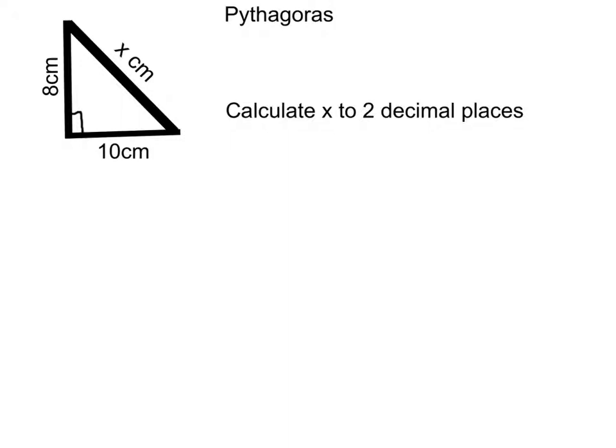So first we always label our diagram. The long side, which is always opposite the right angle, we call c, and then we label the other two a and b.